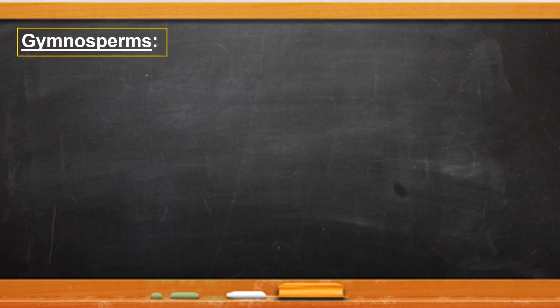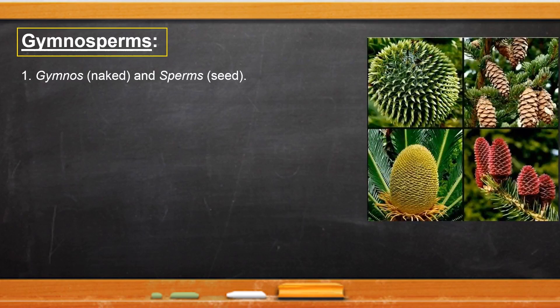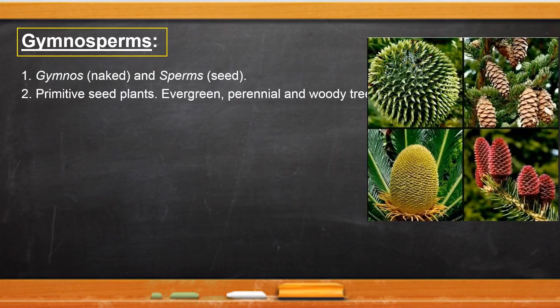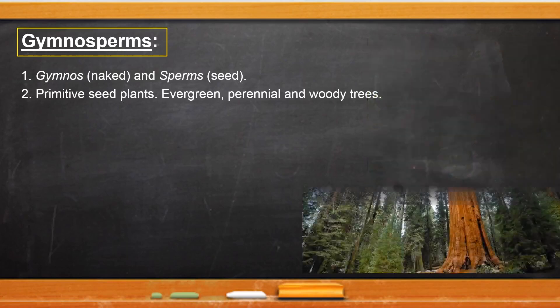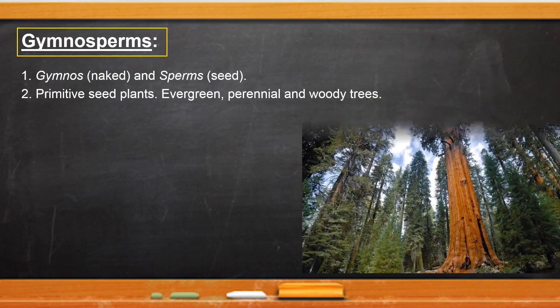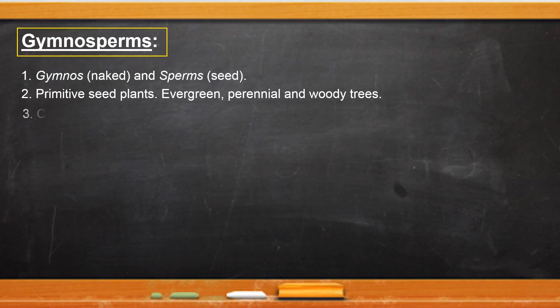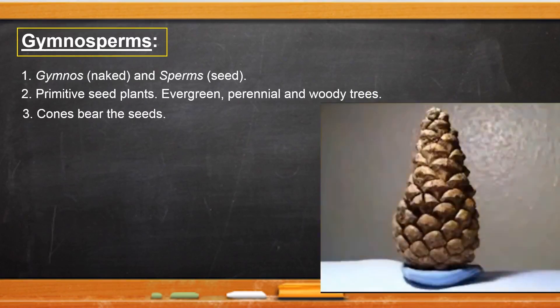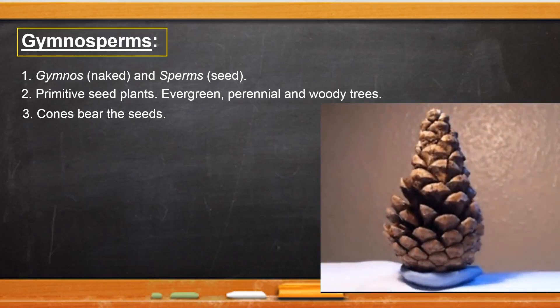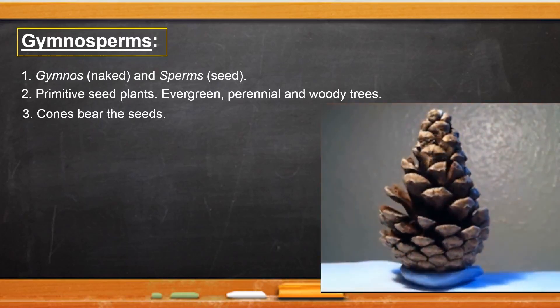Gymnosperms comes from two Greek words: gymnos means naked and sperms means seeds, i.e., naked seeds. These are primitive seed plants which are mostly evergreen, perennial, and woody. The seeds of gymnosperms are developed on the surface of scales and leaves which often grow to form cone or stalk shape.